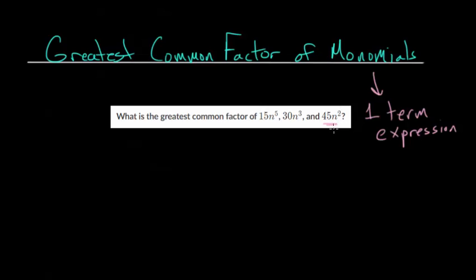Because if we divide by anything bigger than n squared, like let's say n cubed, then this one would result in a fraction, and it wouldn't divide evenly into this expression here. So when looking at the variables, just figure out which one is the smallest, n squared in this case, and that's the greatest common factor, at least for the variables.